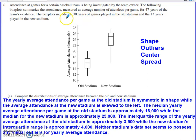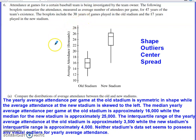The box plots presented at the onset of the problem summarize attendance as average attendees per game for 47 years of the team's existence. We have 30 years of games played in the old stadium and 17 years played in the new stadium. The old stadium is on the left and the new stadium is on the right.